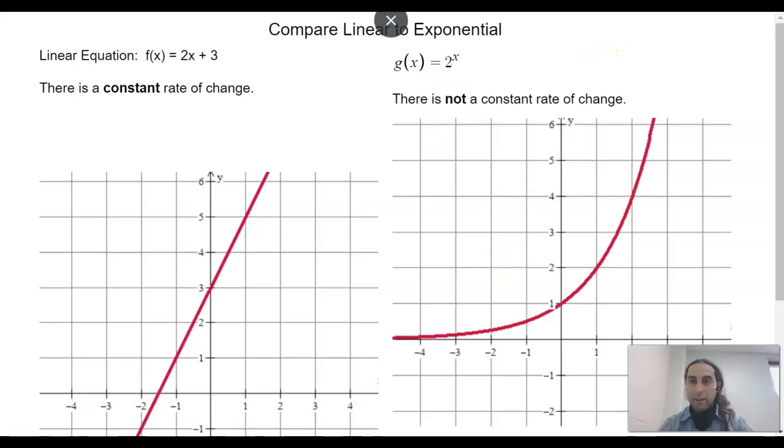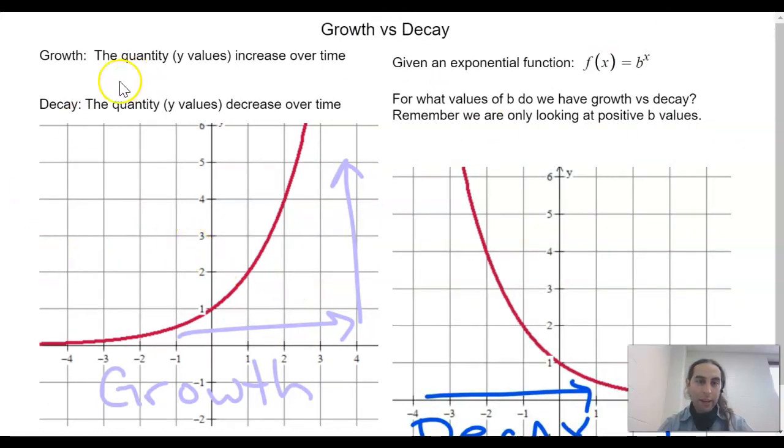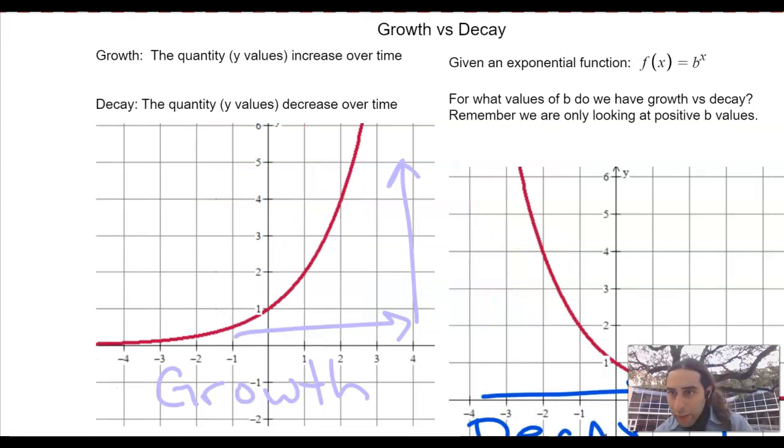All right, so let's see here next. Now there's growth, the quantity, the y values increases over time, and then you have decay, the quantity, the y values decrease over time. So we are talking about growth. So growth increases over time like this. So you see how it's curving up and to the right? But decay, the quantity of y values decreases over time. So see how it goes down to the right. They're both curved. Exponential growth goes up to the right. Decay goes down to the right.